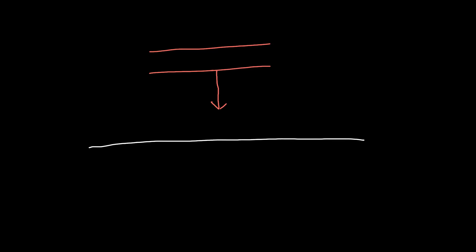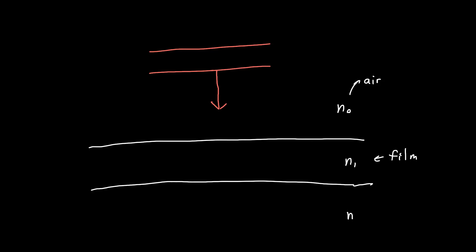Let's say we've got our incident ray coming down and hitting a material. I'm going to call the incoming medium n0 — maybe air or some other medium — and our thin film has refractive index n1, and our substrate, which is semi-infinite in the downward direction, has refractive index n2. As this plane wave initially hits this surface, some of it gets reflected, and now that we have Fresnel's equations we know exactly how much: that amount is r01. The notation r01 means the reflection coefficient going from medium zero to medium one, which for normal incidence is just (n0 − n1)/(n0 + n1).